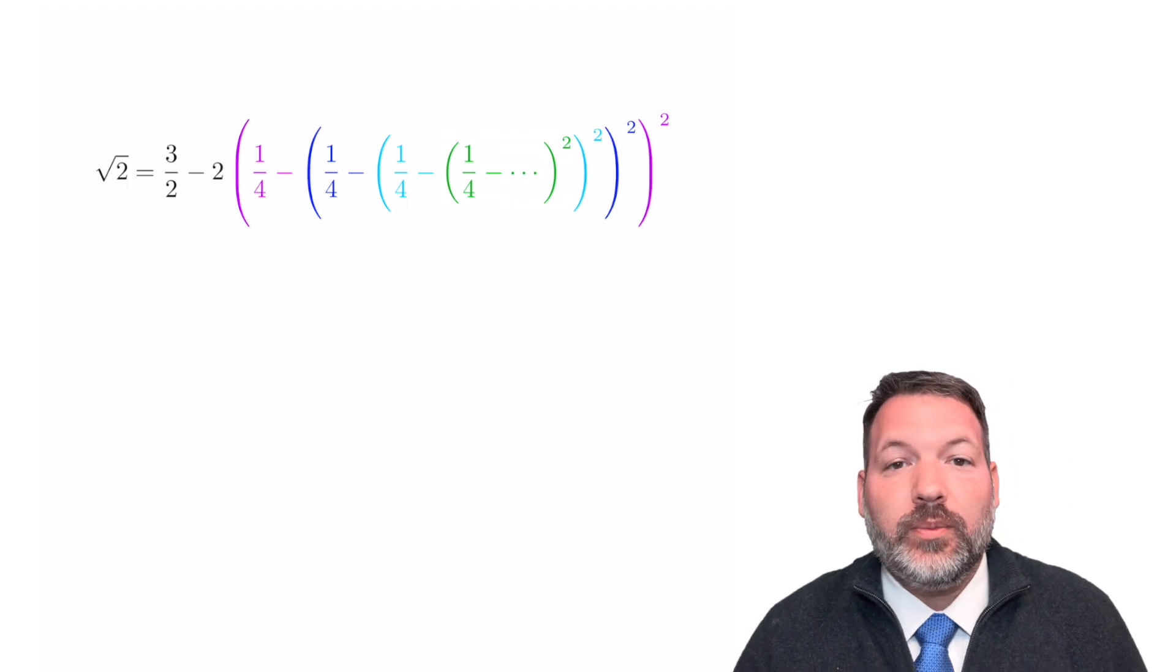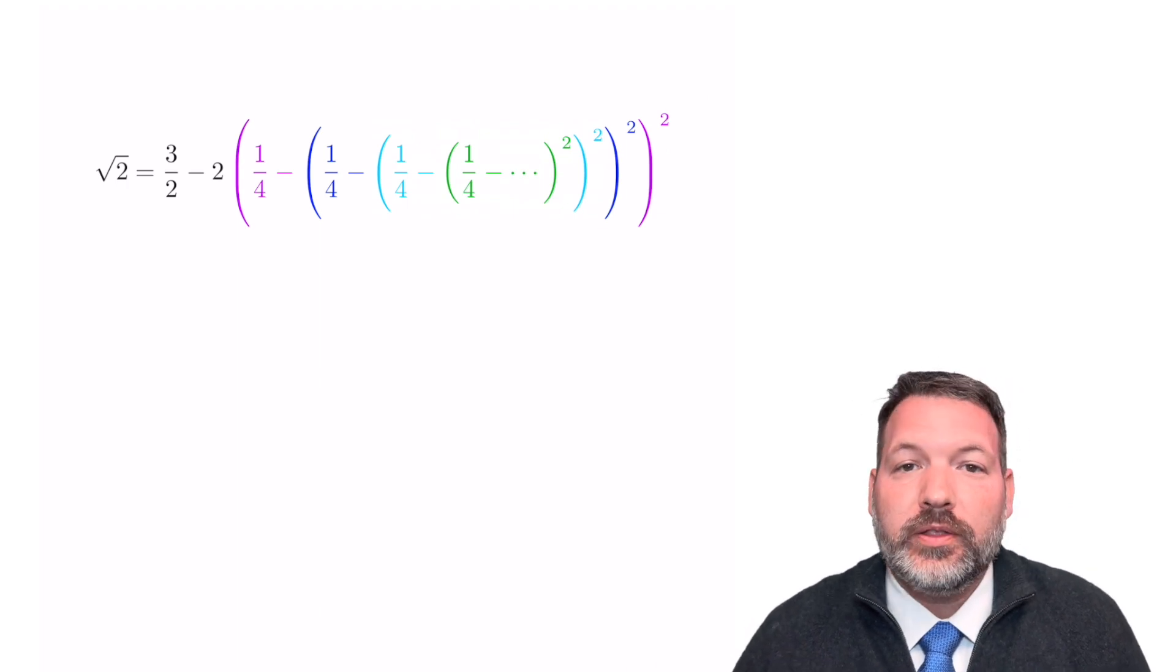squared, squared, squared, squared, all the way back out. And when we compute that, apparently we get the square root of 2.